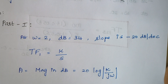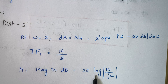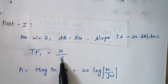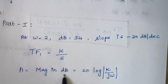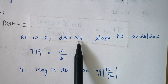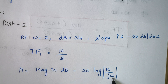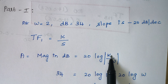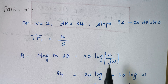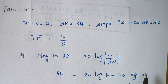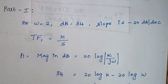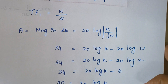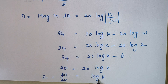As per the formula, the magnitude is given by 20 log of K divided by j-omega, where S is replaced by j-omega. The magnitude in dB is 34, so substitute the values: omega equals 2. The logarithmic division can be represented as logarithmic subtraction — 20 log K minus 20 log omega, with omega equal to 2. Once you substitute and solve, you get log K equal to 2.